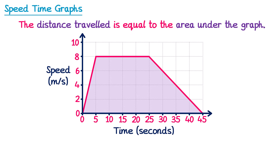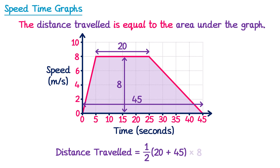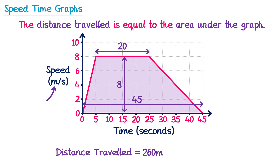For the trapezium formula we need the lengths of the parallel sides. The top goes from 5 to 25, so length 20, and the bottom goes from 0 to 45, so length 45. The height goes from 0 to 8, so that's 8. The distance = ½ × (20 + 45) × 8 = ½ × 65 × 8 = 32.5 × 8 = 260 metres. Since speed was in m/s and time in seconds, distance is in metres — so the total race distance was 260 metres.